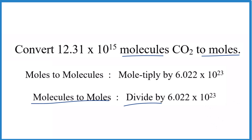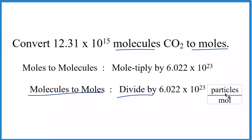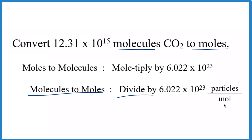We should note that the units we have here are particles per mole. Particles mean things like molecules or atoms. So we're going to take 12.31 times 10 to the 15th molecules and divide that by Avogadro's number, because we're going from molecules to moles.